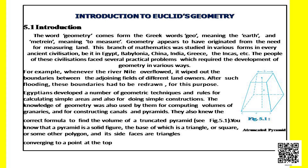Hello students, welcome to the math class. Today we are going to discuss your chapter 5, Introduction to Euclid's Geometry. The word geometry comes from the Greek words: geo means the earth and metrian means to measure. Geometry appears to have originated from the need of measuring land.